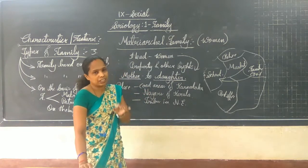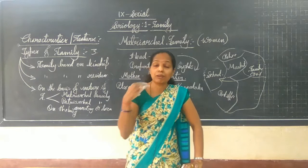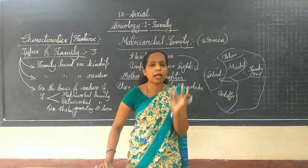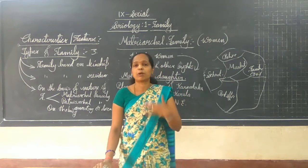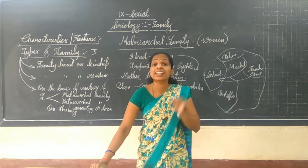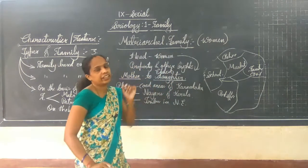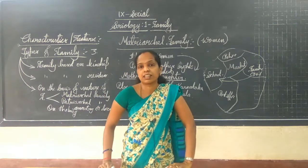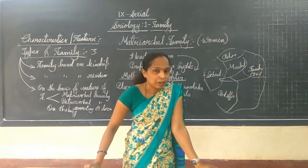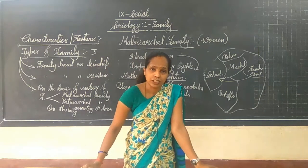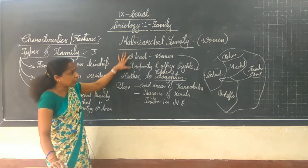In a patriarchal family, the father is the centre of the family and is considered the head. Entire property rights and other rights go to him. After him, the property and rights pass to his eldest son — from father to eldest son. This type of family can be seen in ancient Greece, ancient Rome, and also in China and India. Even today such type of family exists.